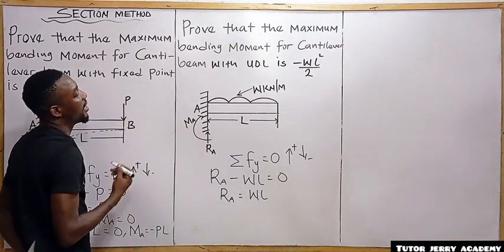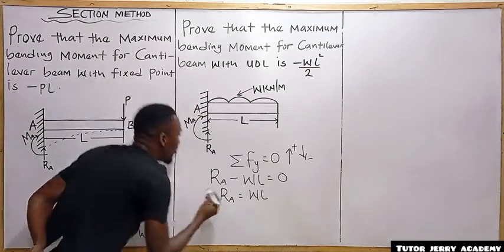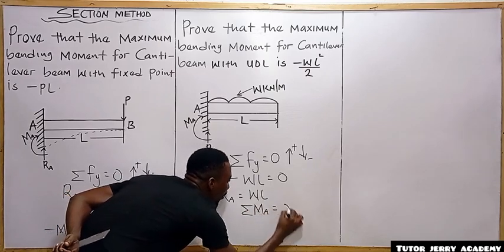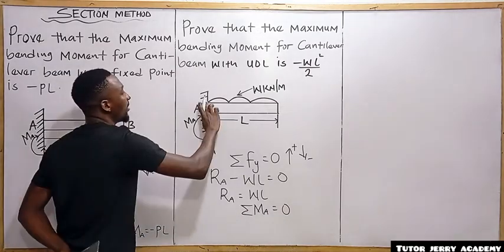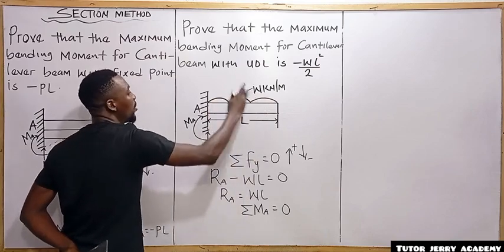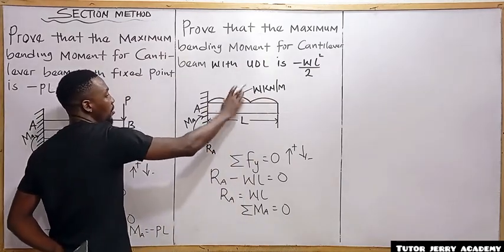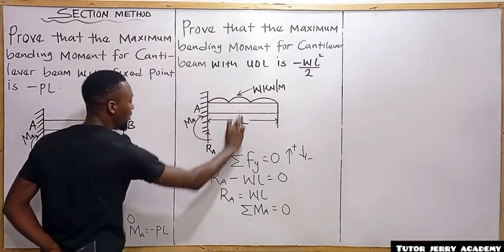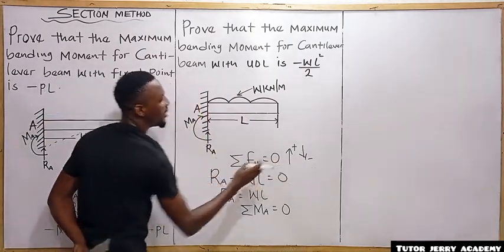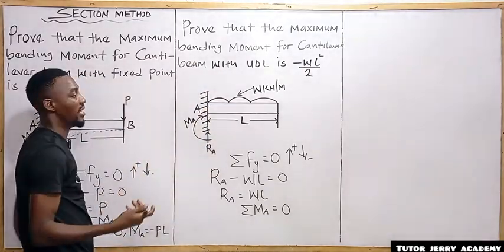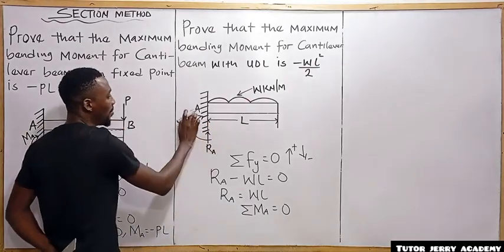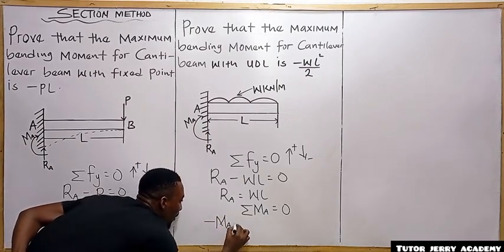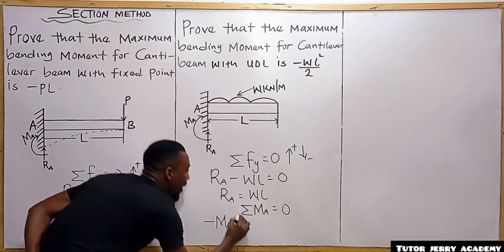Next, we take the moment about point A equals zero. We convert the UDL to a point load. This downward point load creates a clockwise moment, same direction as the moment at A. Since downward force is negative, the moment created is also negative. So we get: minus M_A minus WL times (L/2) equals zero.